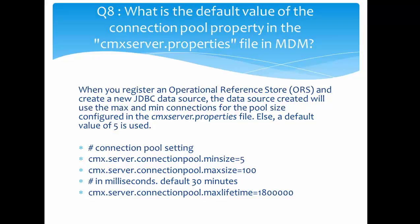Whenever we register an ORS (Operational Reference Store) and create a new JDBC data source, that data source will use the maximum and minimum connection pool sizes configured in the CMX_server.properties file. If we do not configure this value, the default value is 5. We can change this value in the CMX_server.properties file.